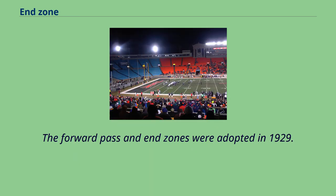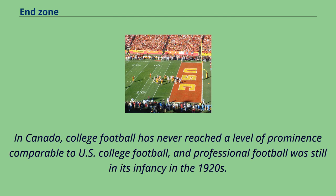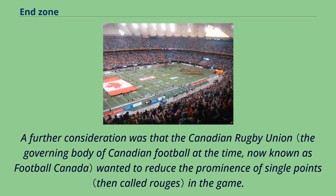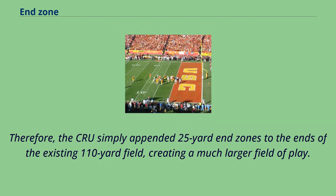The forward pass and end zones were adopted in 1929. In Canada, college football has never reached the level of prominence comparable to US college football, and professional football was still in its infancy in the 1920s. As a result, Canadian football was still being played in rudimentary facilities in the late 1920s. A further consideration was that the Canadian Rugby Union wanted to reduce the prominence of single points in the game. Therefore, the CRU simply appended 25-yard end zones to the ends of the existing 110-yard field, creating a much larger field of play.